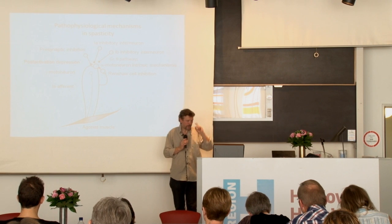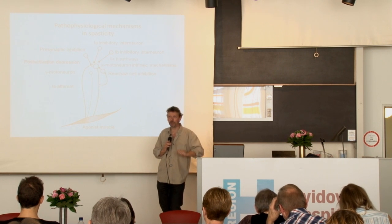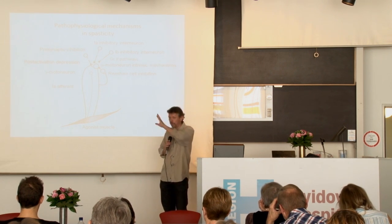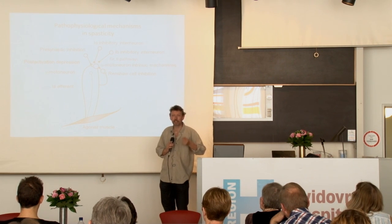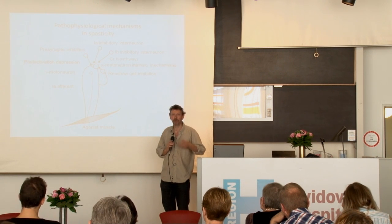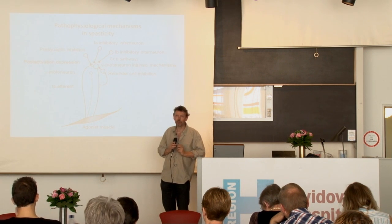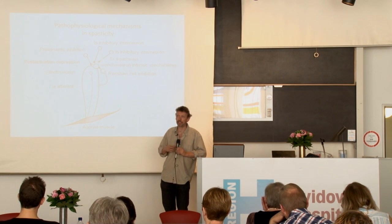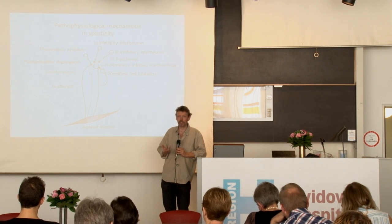One thing which is important here is that spasticity is not something which just comes on whenever you have a brain injury. You certainly have some kind of injury of the descending pathways, but spasticity develops through several weeks, several months. So it's an adaptation in the spinal networks which are normally controlled from these indirect pathways. Actually, spasticity should be seen as plasticity.